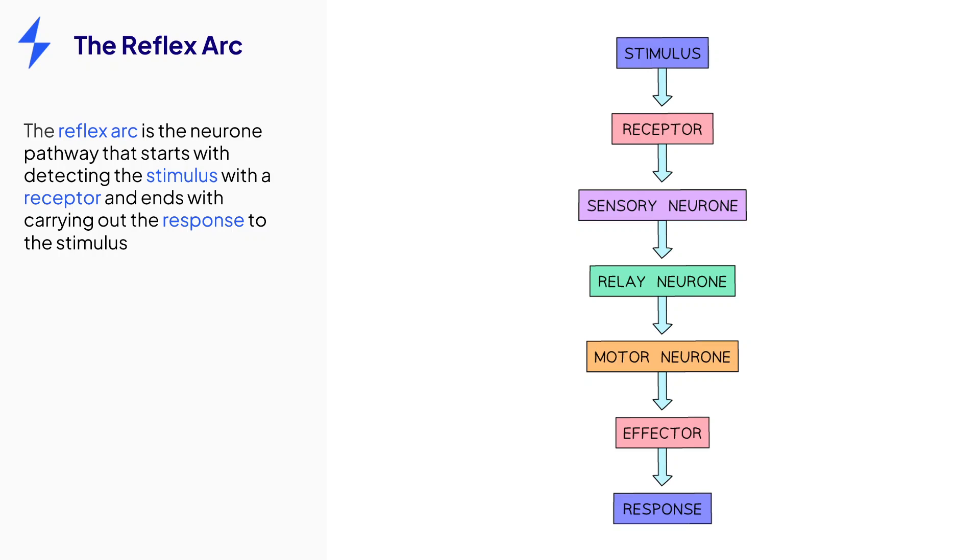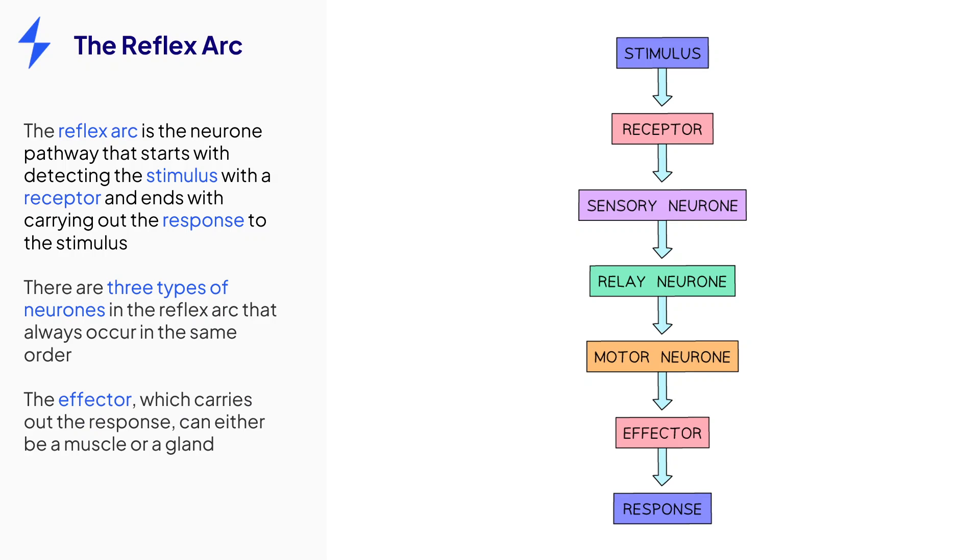The stimulus is the trigger of the reflex, such as touch, light or sound. The three types of neurons transmit the impulse in one direction, which results in the effector, such as a muscle or a gland, carrying out the response.